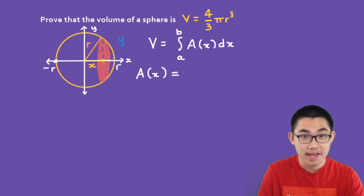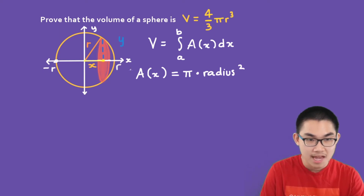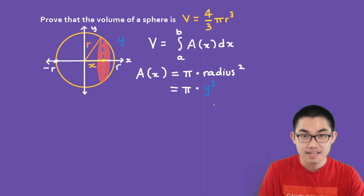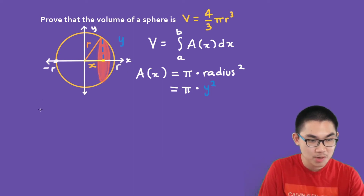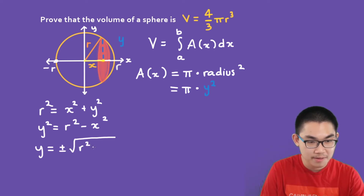We know that the area of a circle is pi times the radius squared. Now the radius of this cross-section is y, so we can rewrite this as pi times y squared. We need to rewrite y in terms of x. Looking at this triangle, we can use the Pythagorean theorem: R squared equals x squared plus y squared, so y squared equals R squared minus x squared.